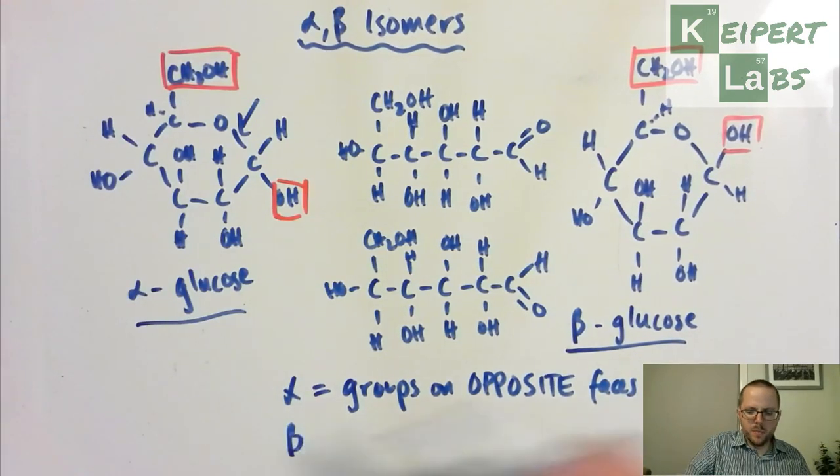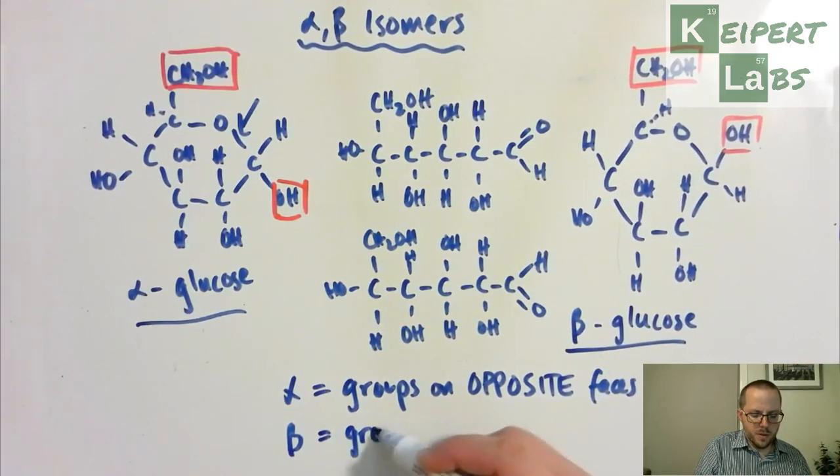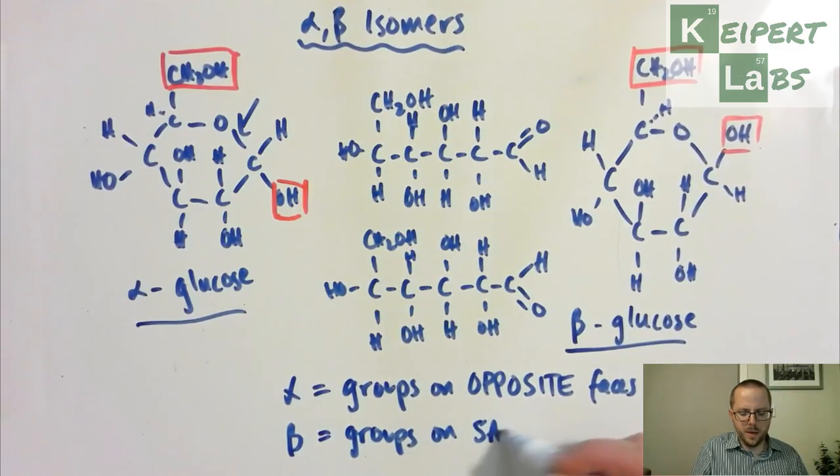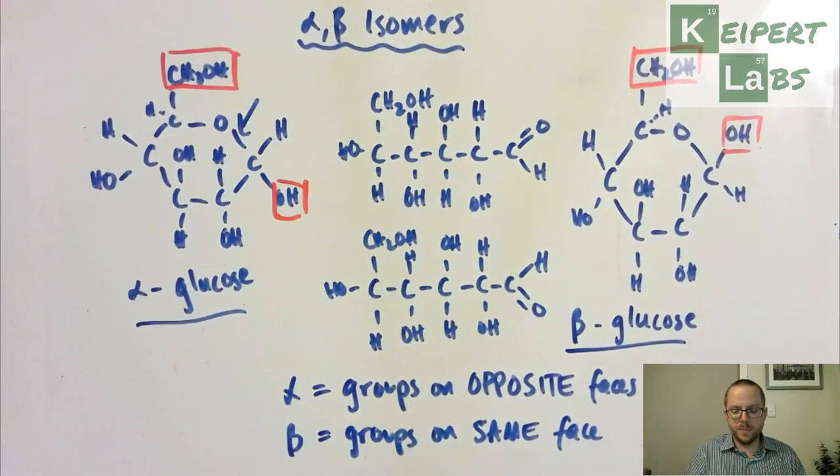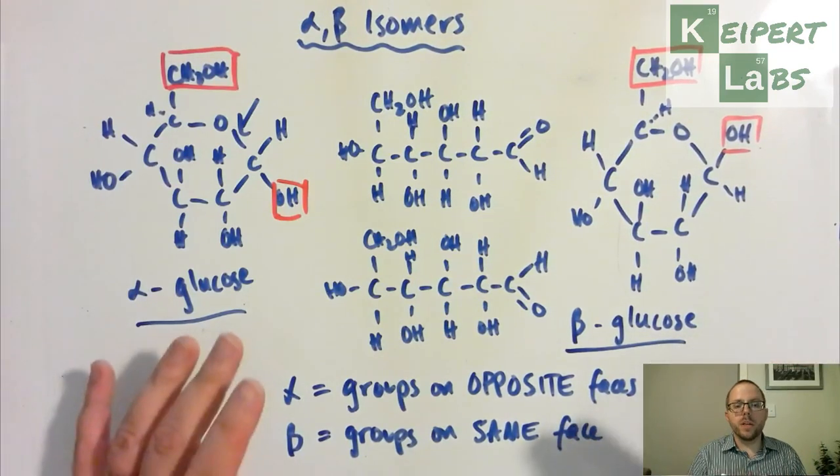Whereas then beta, we see that they're both pointing up. That these two groups are on the same face of the ring. That if you made it this way that they're both pointing up. If it was facing down the other way, they'd both be pointing down.